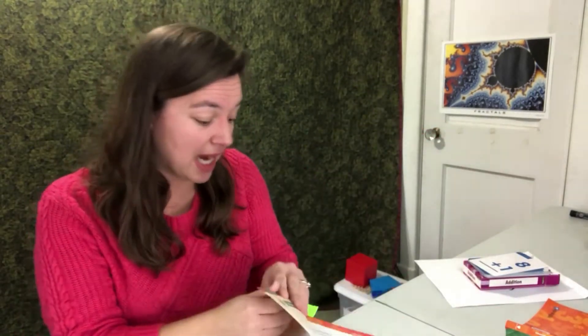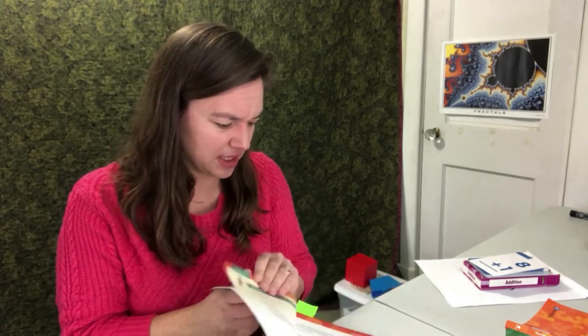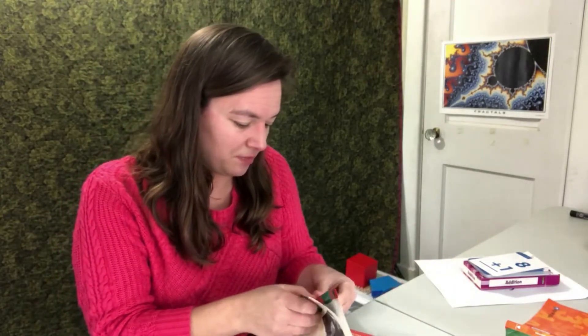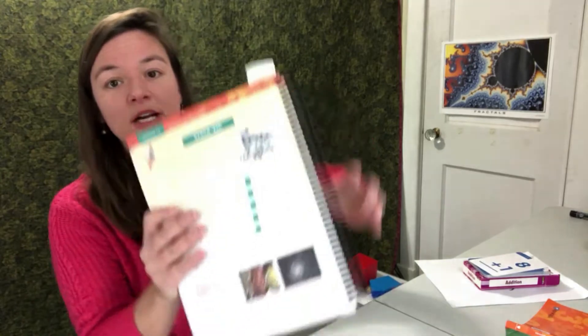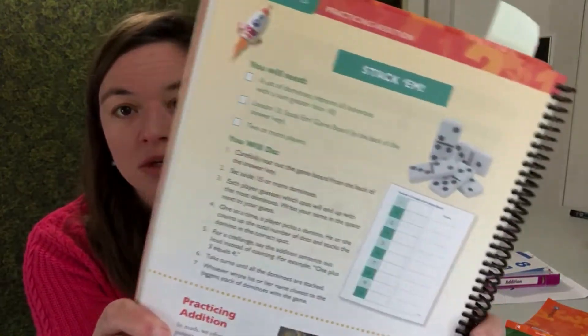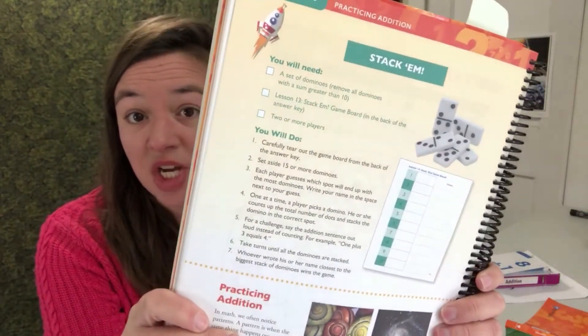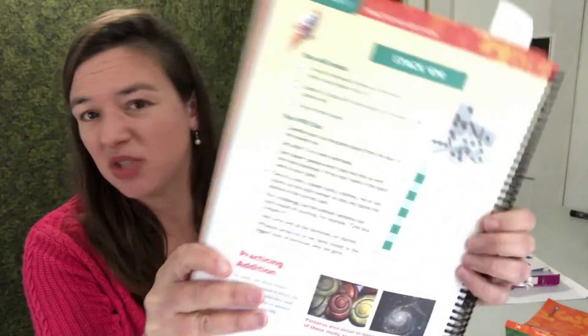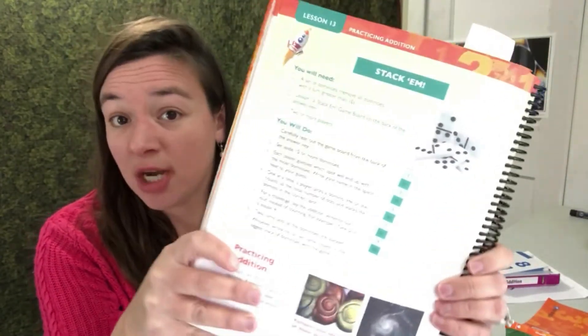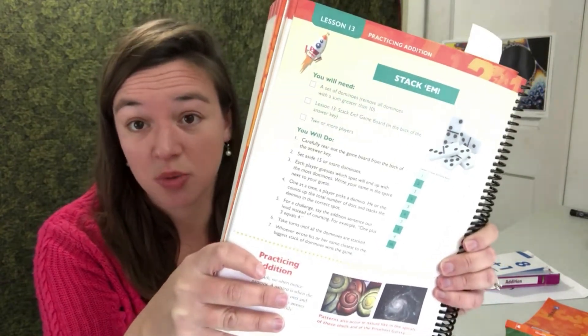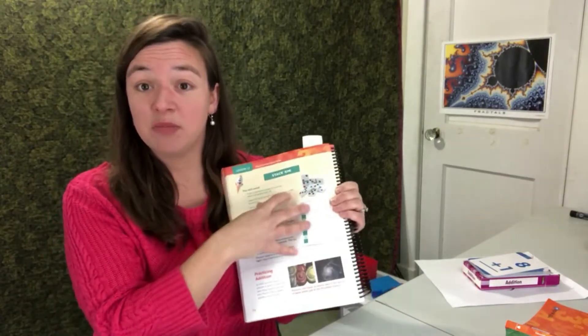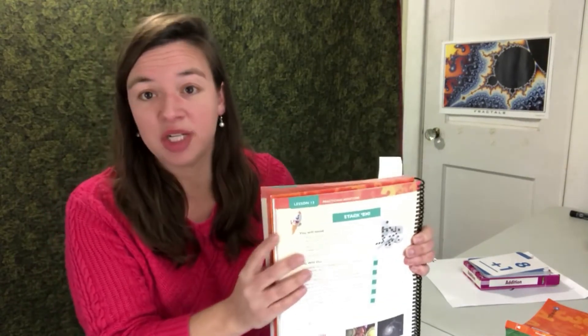The same goes with Stackum. Stackum was just a few lessons later in the student book. And, in Stackum, they use dominoes, and they add up the sum of the dots, and they have to put it in certain spaces. So pretty similar. And, if you don't have dominoes, we have those printable for you on the book extras website. So, you can always do that, revisit a game. I didn't put the same games in the student book over and over again because I didn't want it to be too repetitive. But, if your child really likes a game, be sure to recycle it.